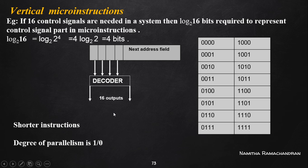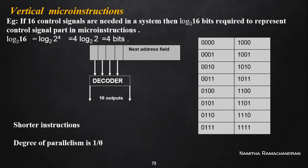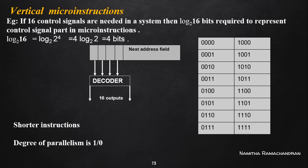This is not the case for horizontal micro instructions, where the degree of parallelism is n — we can activate any number of control signals at a time. However, usually while executing a micro instruction, we need to activate only a single control signal, which is enough for executing a certain micro operation. So in many cases, this high degree of parallelism is not a significant advantage.